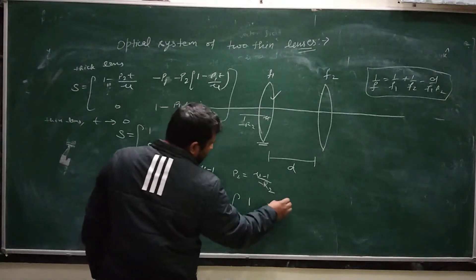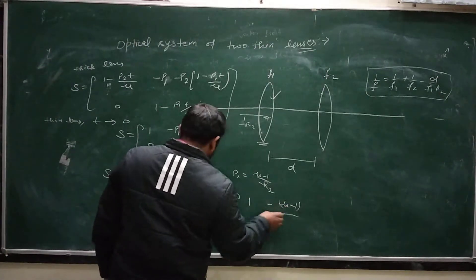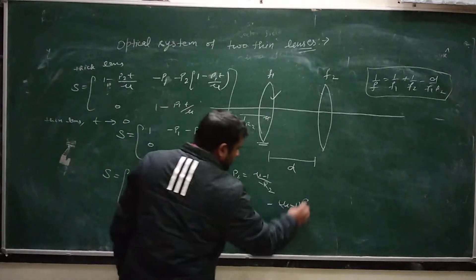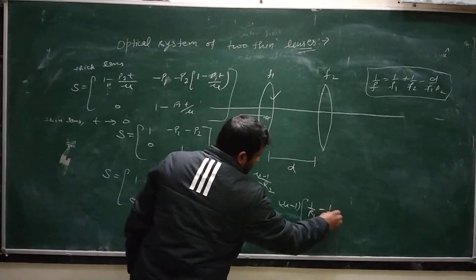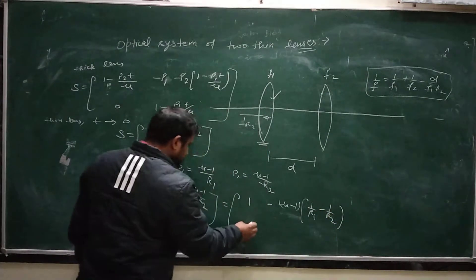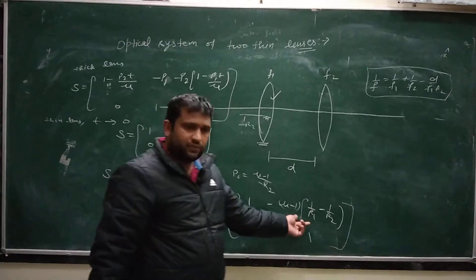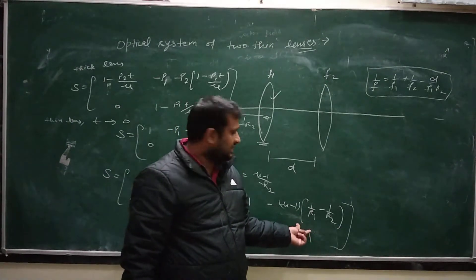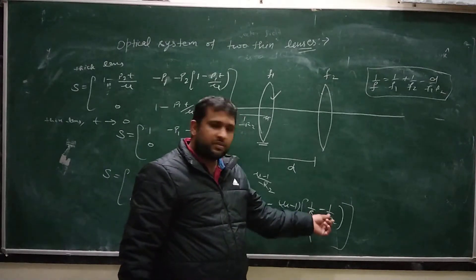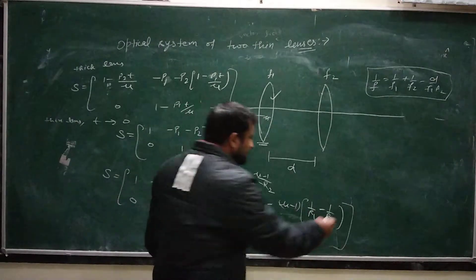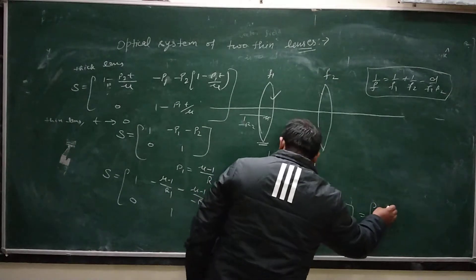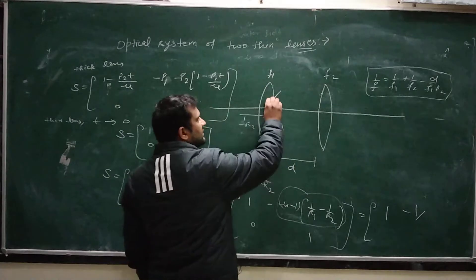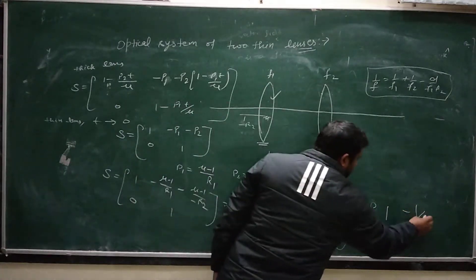Substituting, the system matrix becomes: [1, 0; −(μ−1)(1/R1 − 1/R2), 1]. This element −(μ−1)(1/R1 − 1/R2) is the reciprocal of the focal length of the thin lens, as given by the lensmaker's formula: 1/f = (μ−1)(1/R1 − 1/R2). So this element is −1/f1, and the system matrix for the thin lens is [1, 0; −1/f1, 1].